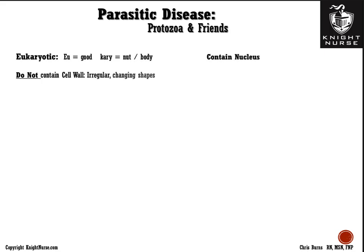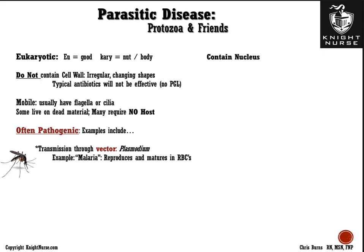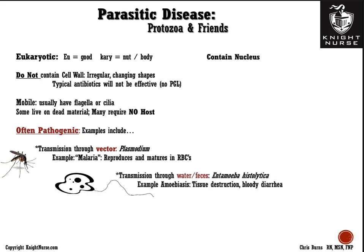Parasitic diseases are caused by protozoa and related organisms. They're eukaryotic with no cell wall, so typical antibiotics are ineffective — atypical antimicrobials are used instead. They're mobile, often using flagella or cilia. Examples include malaria, transmitted by mosquito vectors where plasmodium reproduces in red blood cells; Entamoeba histolytica, transmitted through fecal-contaminated water, causing tissue destruction and bloody diarrhea with severe dehydration risk; and helminths like hookworm, which attach to the host and extract blood for nutrients.